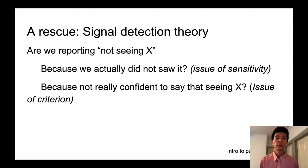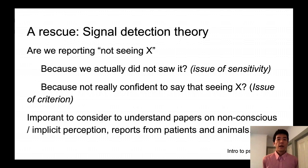The second possibility is that because you did not have enough evidence to say that I saw X, therefore you chose to say no, I didn't see X. And this is the issue of criterion. And this signal detection theory can discriminate between the possibility of issue of sensitivity versus criterion through the analysis called receiver operating characteristic that I'm going to show in a couple of slides.